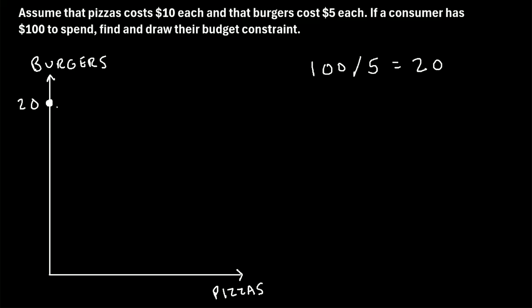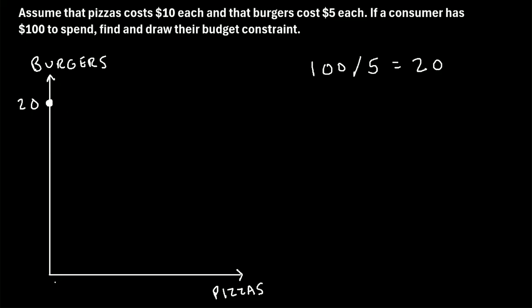Notice that when we're on this axis, if we buy 20 burgers, we're at zero on the x-axis — the pizzas axis. So if we buy 20 burgers, we don't have any money left to buy any pizzas, meaning we would buy zero pizzas.